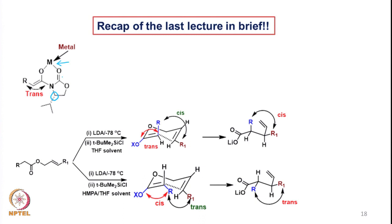How do we get the anti-aldol? For anti-aldol formation, if we use an extra Lewis acid, that extra Lewis acid does not allow the aldehyde to break the boron enolate, and the chelation remains intact. The Lewis acid interacts with the aldehyde and disposes it in such a fashion that the carbonyl of the aldehyde and the carbonyl group of the oxazolidinone part are away from each other in the transition state, and that allows the formation of the anti-aldol.